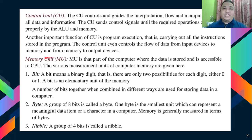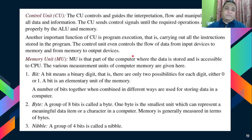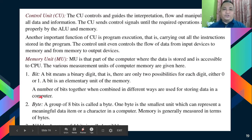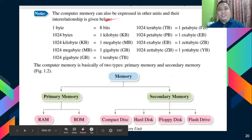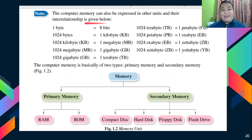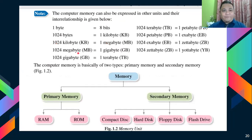We also have the memory unit. Just like humans, computers also have memory. The various units of computer memory are: a bit — the binary digit — which has two possible values: zero or one. A byte is a group of eight bits. A nibble is a group of four bits. The unit interrelationship is: 1 byte = 8 bits; 1024 bytes = 1 kilobyte; 1024 kilobytes = 1 megabyte; 1024 megabytes = 1 gigabyte; 1024 gigabytes = 1 terabyte, and so on.